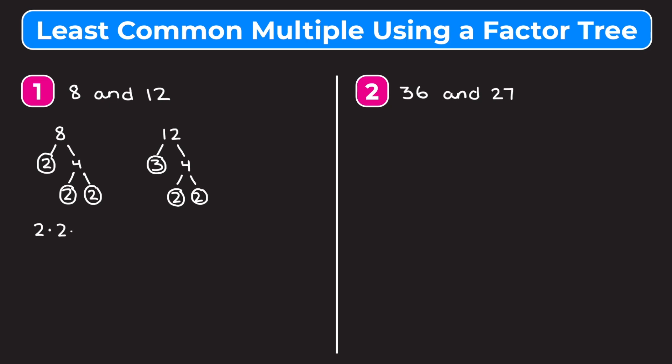This means 8 can be written as 2 × 2 × 2 — that is the prime factorization of 8. And 12 can be written as 2 × 2 × 3; you just multiply all the prime numbers circled in our factor tree together, and that's called the prime factorization. Now to use this to find the least common multiple, we want to take each number that shows up in either prime factorization and take however many times it shows up the most.